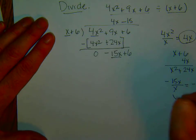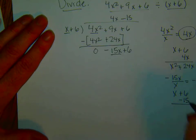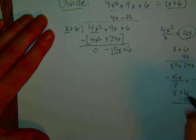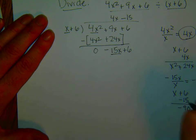And then we multiply. We take our divisor, x plus 6, and we multiply it by negative 15. Negative 15 times 6 is negative 90, negative 15 times x is negative 15x. Multiply.